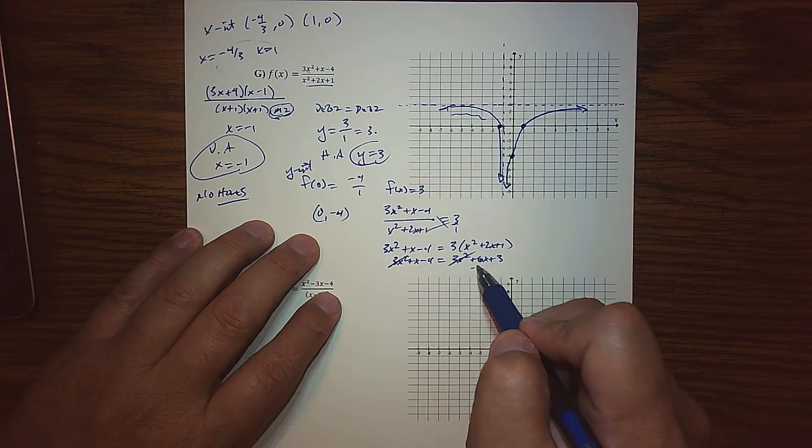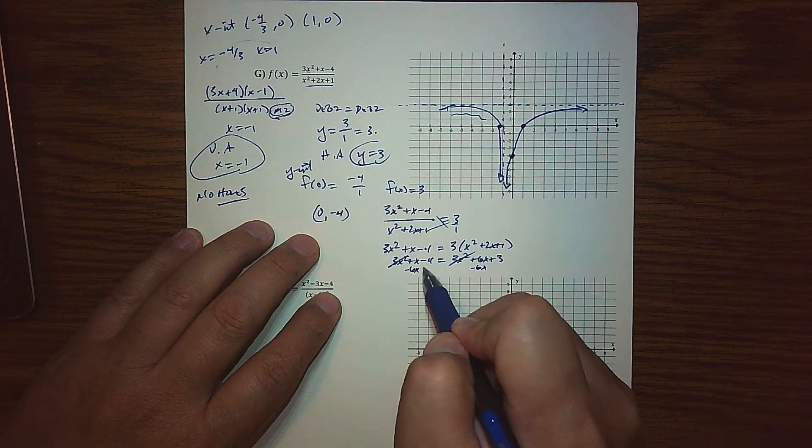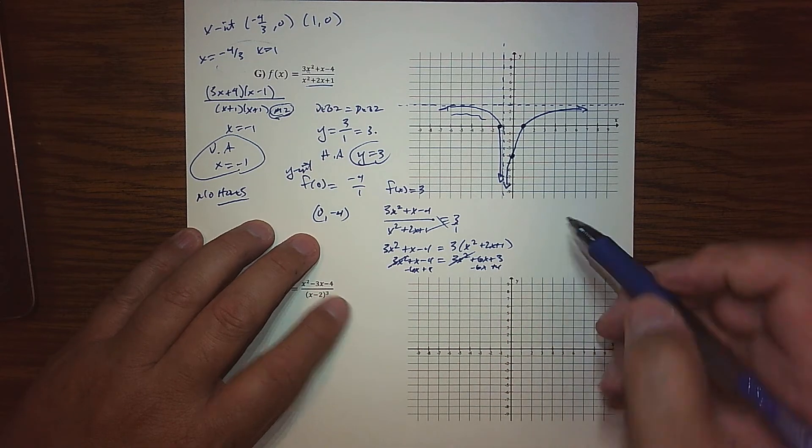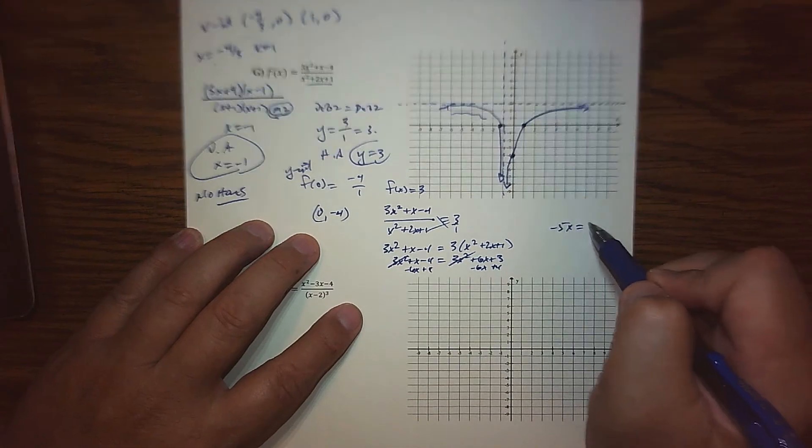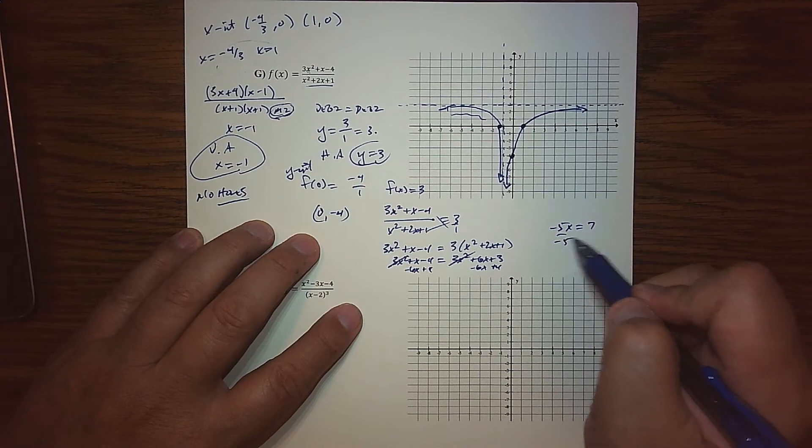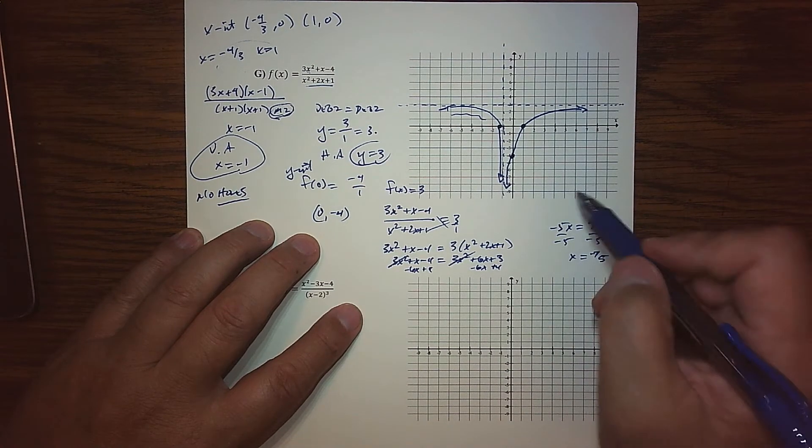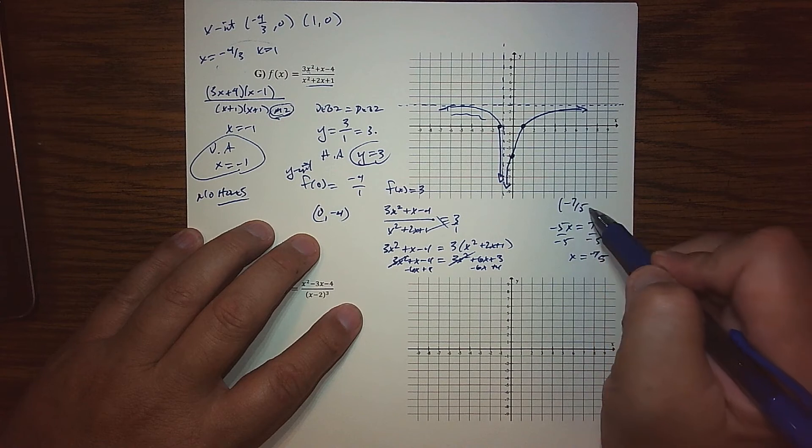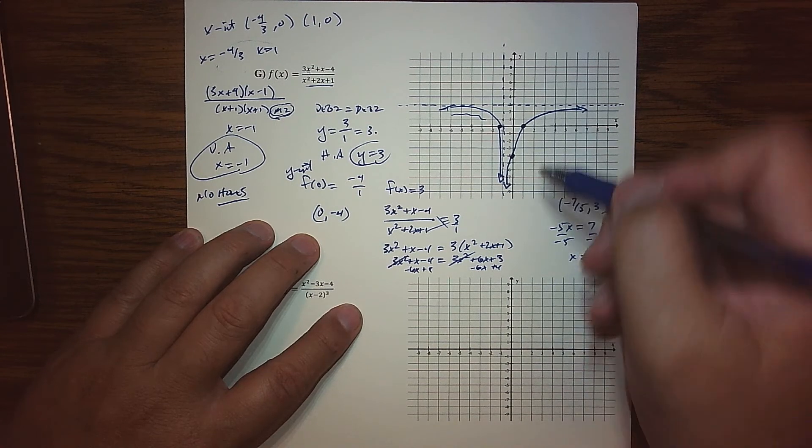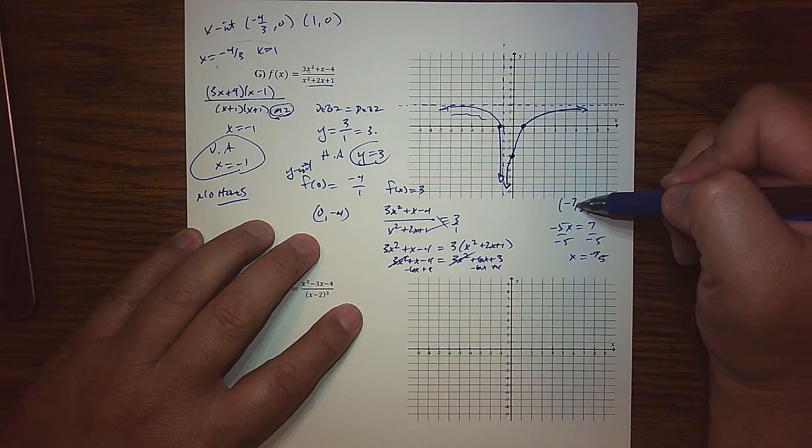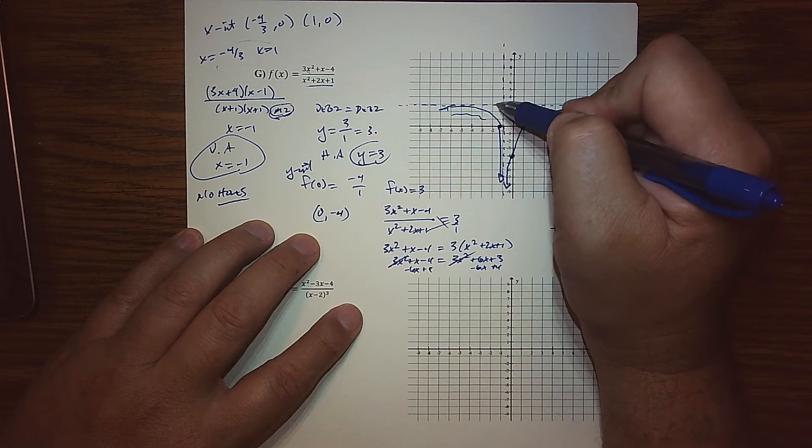This gives us 3x squared plus 6x plus 3. The 3x squared will cancel out when I subtract. If I subtract 6x from both sides and add 4, what we end up getting is negative 5x equals 7. If we divide by negative 5, we get that we actually cross this, so negative 7 fifths, 3 is a point on the graph.